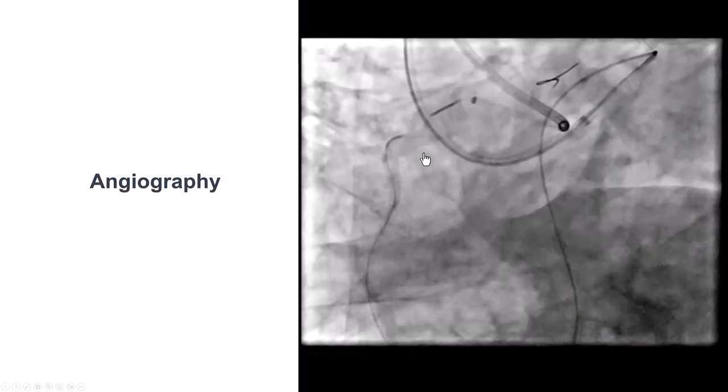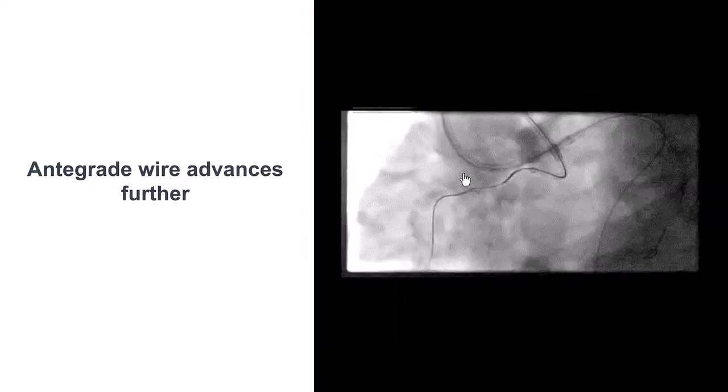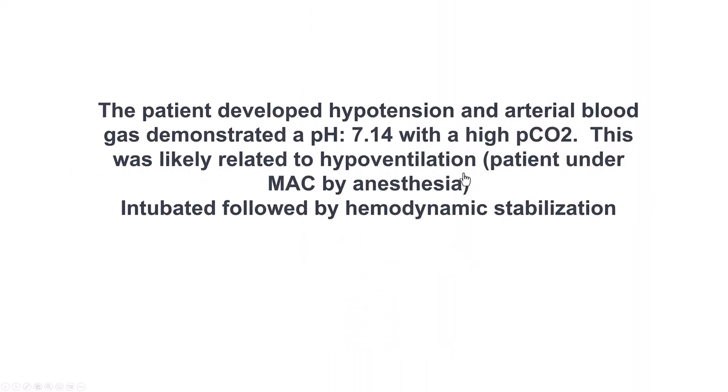An injection from the microcatheter shows that we're in the extraplaque space. We're able to advance the antegrade wire a little bit further. But at this point, the patient developed hypotension and was found to be in acidosis due to hypoventilation.